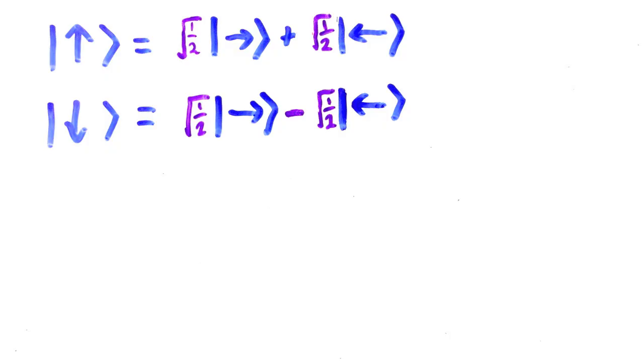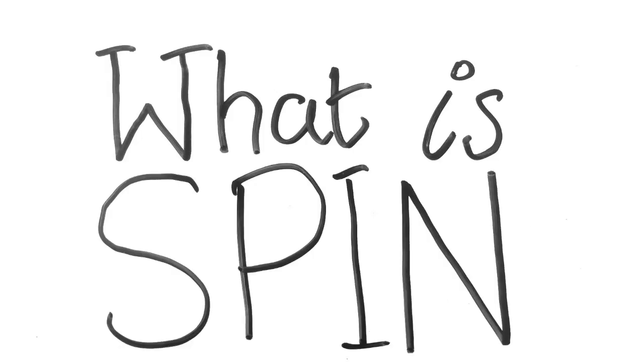Okay, so now I've shown you how quantum mechanics deals with spin, let's return to the much more difficult question. What is spin? The electrons aren't doing little loops, so why are they magnetic?